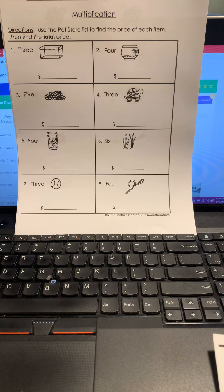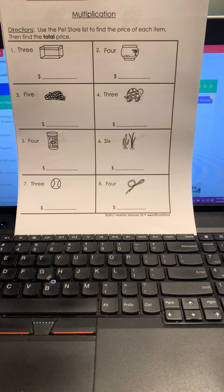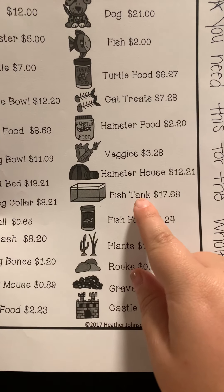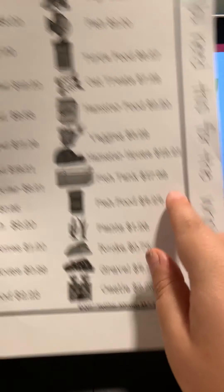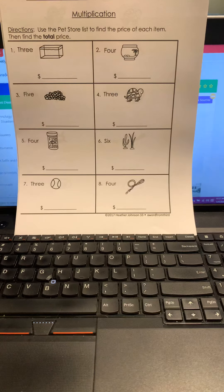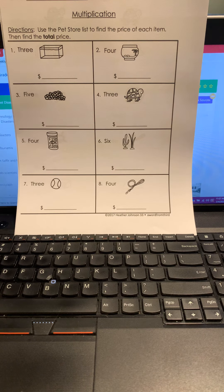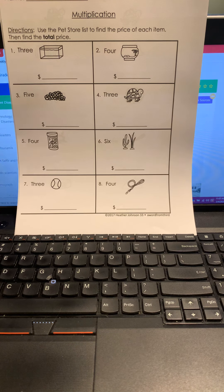So the first one says a fish tank. A fish tank costs $17.68, and we need three of them. So let me get out my little dry erase board so we can do the math for this. Wait one second.